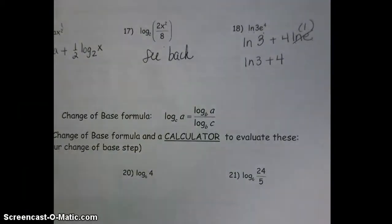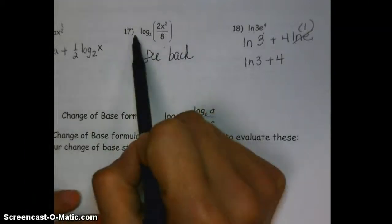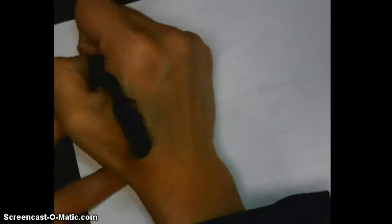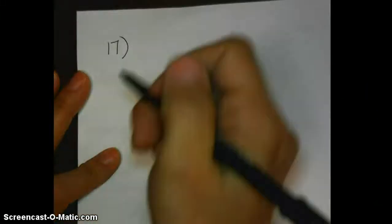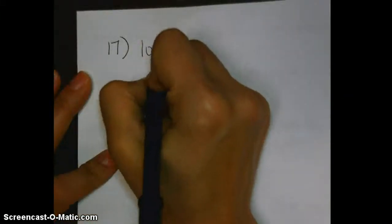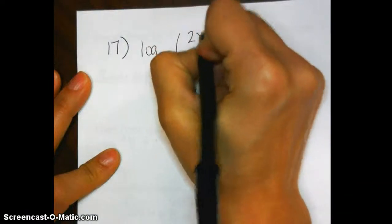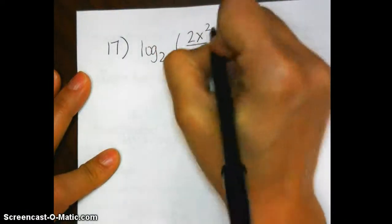All right, so now what I need you guys to do is we're going to redo problem 17 on the back side of this because we've got more space here. And this problem I want to show you in two ways. So the problem is log base 2 of quantity 2 x squared divided by 8.